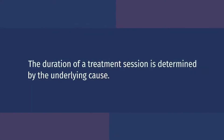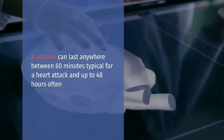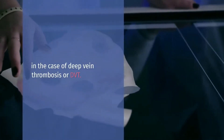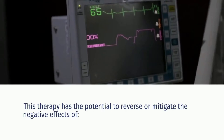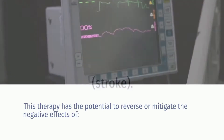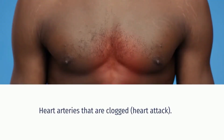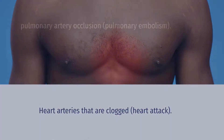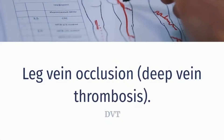The duration of a treatment session is determined by the underlying cause. A session can last anywhere between 60 minutes, typical for a heart attack, and up to 48 hours, often in the case of deep venous thrombosis or DVT. This therapy has the potential to reverse or mitigate the negative effects of atherosclerosis of the brain's arteries or stroke, when heart arteries are clogged or heart attack, in cases of pulmonary embolism, and in leg vein occlusion or DVT.